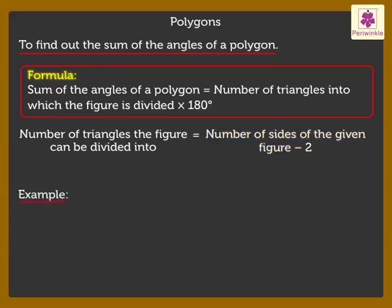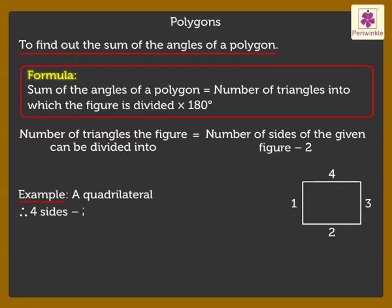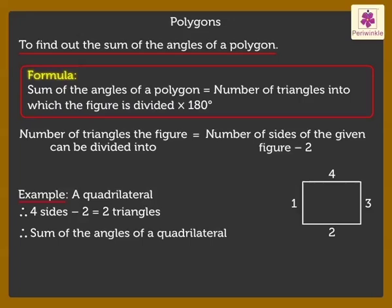Let us take an example of a quadrilateral to understand it in a better way. A quadrilateral is a four-sided polygon. Therefore, four sides minus two is equal to two triangles. Therefore, the sum of the angles of a quadrilateral is equal to two into 180 degrees. That is equal to 360 degrees.